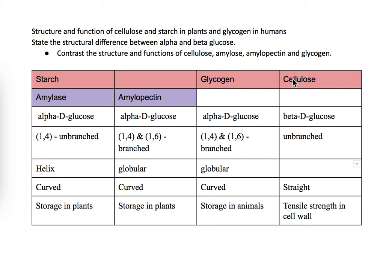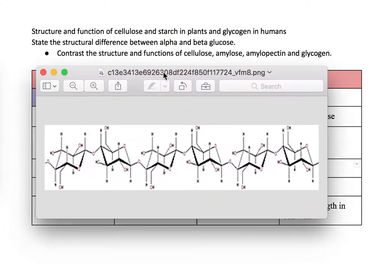For cellulose, this is the biggest difference — it's actually quite different from all the rest. Cellulose is made out of beta-D glucose, and this is one of the major reasons that everything else is different. It is unbranched and straight, and its function is to provide tensile strength in cell walls in plants. So it's not globular — it's straight.